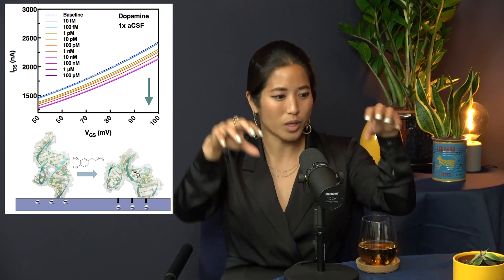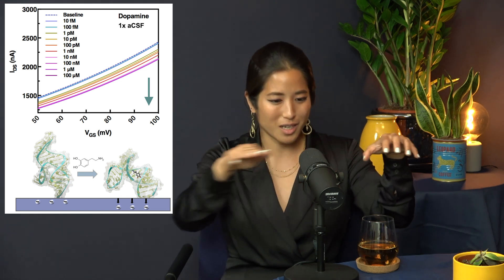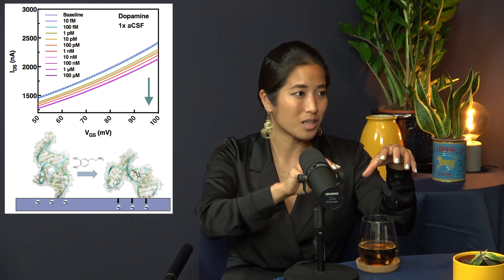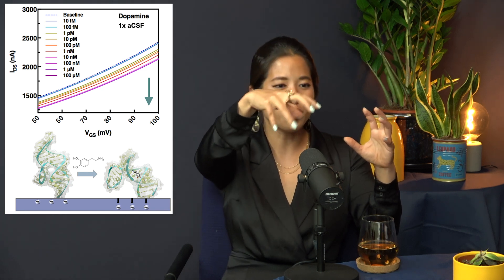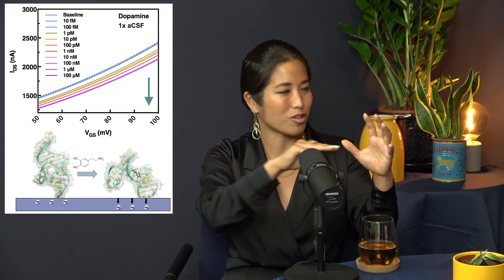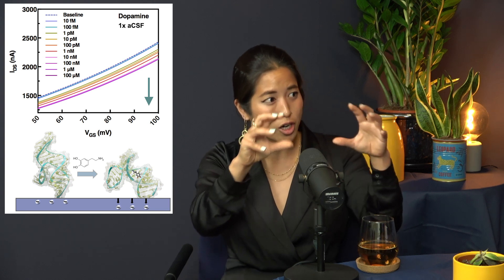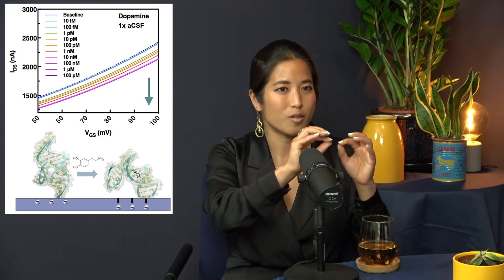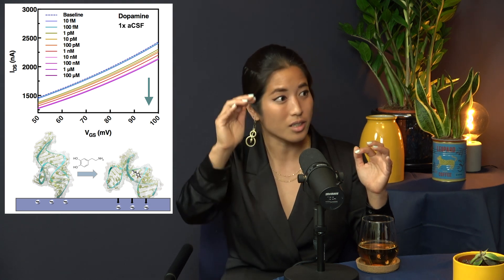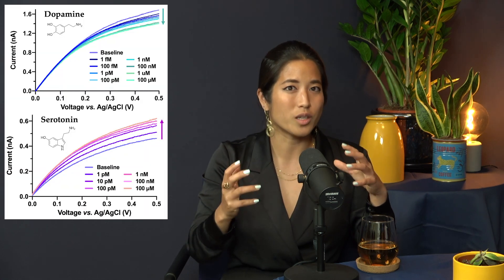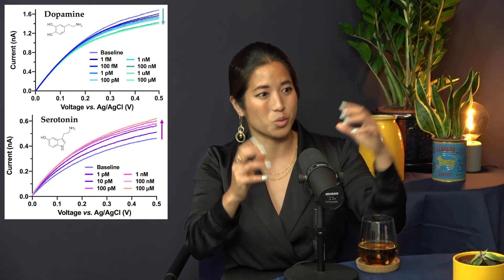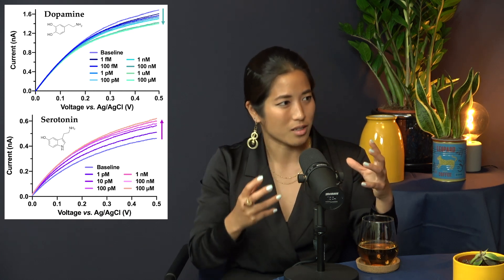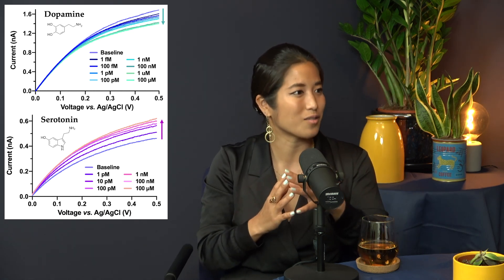For example, at the surface of field effect transistors, you have a source and drain electrode with a semiconducting channel. In an n-type semiconductor, electrons carry charge from source to drain. When the aptamer moves its backbone, it changes how many electrons can pass through the semiconductor by altering the surface charge density. We record this as a change in current — increasing or decreasing — depending on whether the aptamer structure compresses, elongates, or something in between.